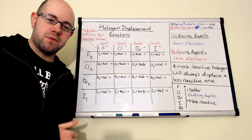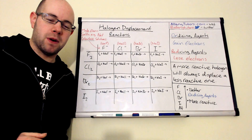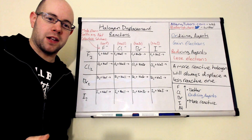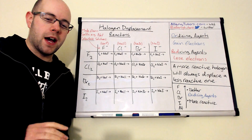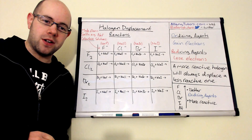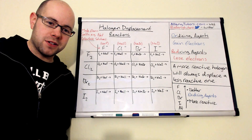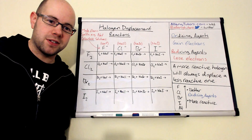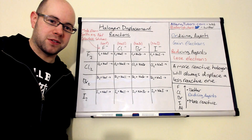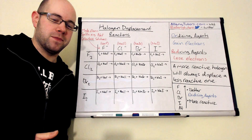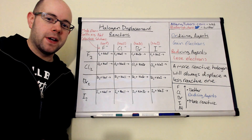In this video we're going to look at what we mean when we say a halogen is more reactive than another. We're also going to look at the equations related to halogen displacement reactions, the observations that you would see, and practical applications of this as well.